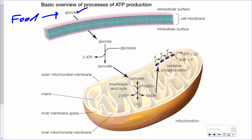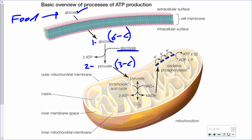Glucose makes its way into the cells, and the process of glycolysis — which means the splitting of sugar or the splitting of glucose — takes place in the cytosol of the cell. It does not require the mitochondria at all. Overall, you're taking a six-carbon compound, glucose, and splitting it into two pyruvate molecules, each with three carbons. This generates the usable form of energy, ATP, as well as reducing power NADH, which will eventually be used in oxidative phosphorylation.